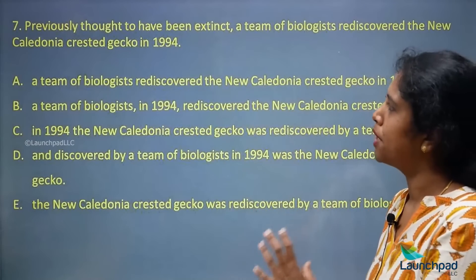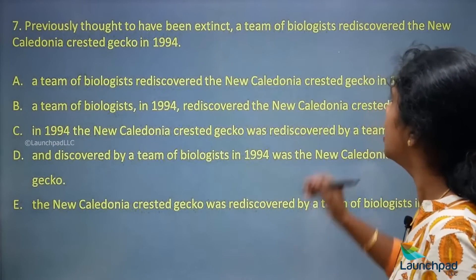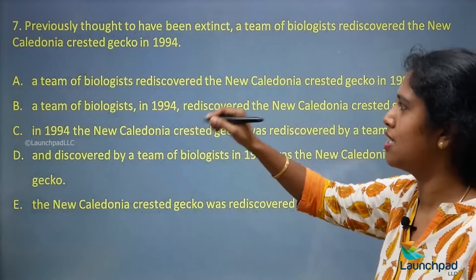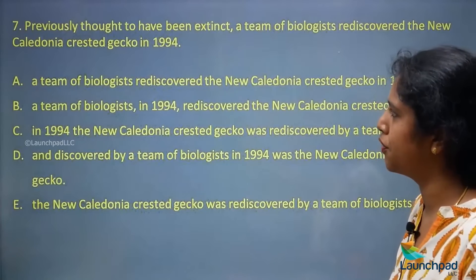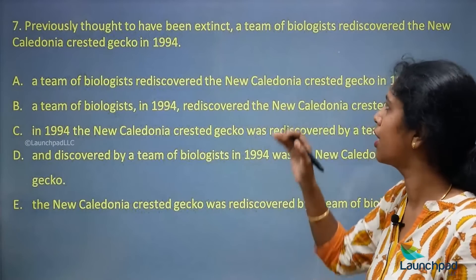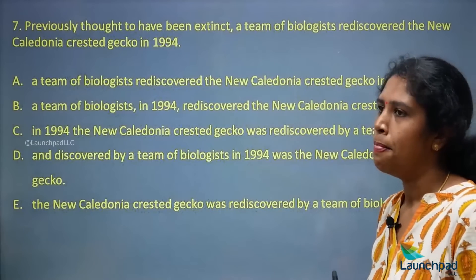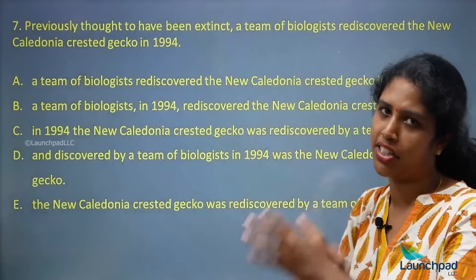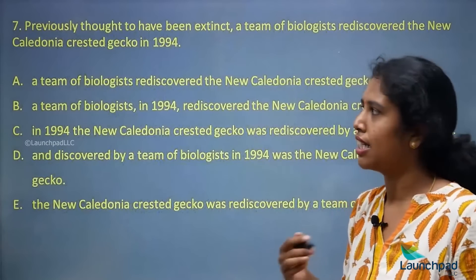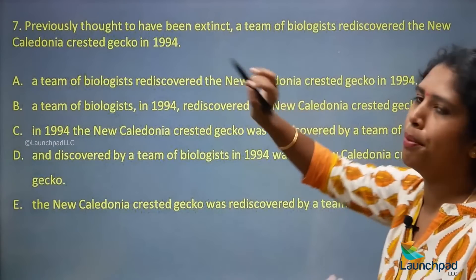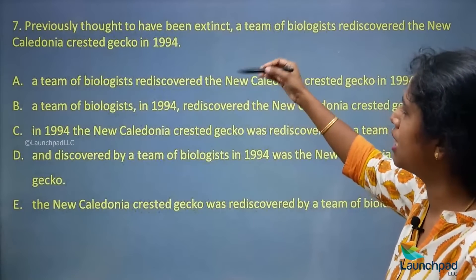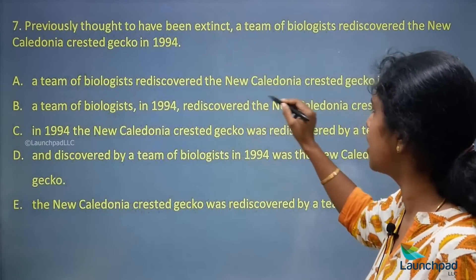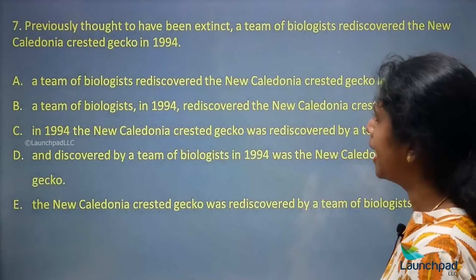Next: 'Previously thought to have been extinct, a team of biologists rediscovered the New Caledonian crested gecko in 1994.' This is a sentence correction pattern — you have to form a proper sentence from five options. The options include: 'A team of biologists rediscovered the New Caledonian crested gecko in 1994' and 'A team of biologists in 1994 rediscovered the New Caledonian crested gecko.'